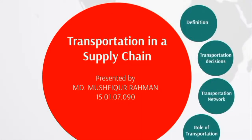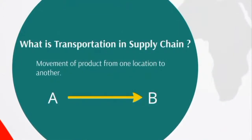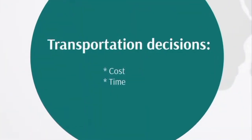Transportation in a supply chain. Transportation is the movement of goods from one location to another. Common forms of transportation include planes, trains, trucks, ships, and other two-wheeled vehicles such as bikes or motorcycles. Transportation decisions depend on two things: cost and time.